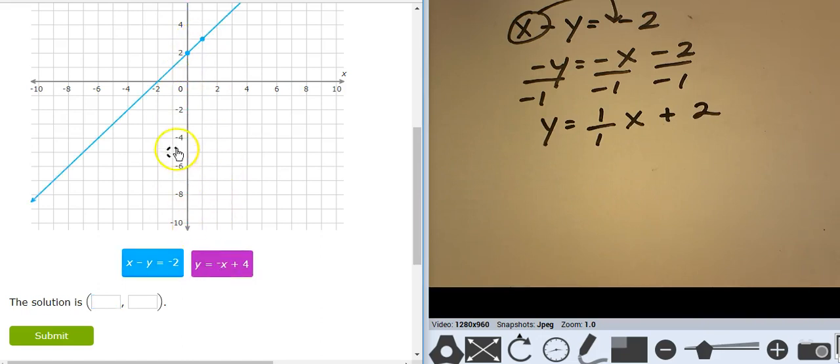And the purple one is already in slope intercept. So it starts at 4 and goes down 1 over 1. There's my solution right here at 1, 3.